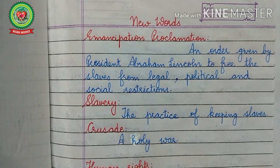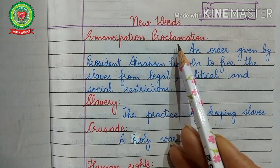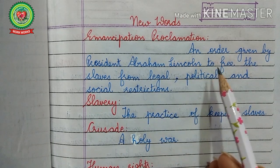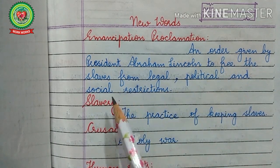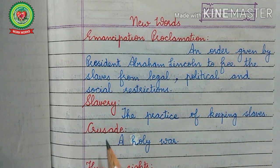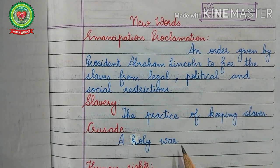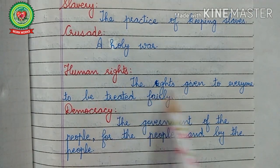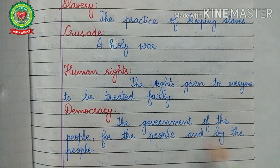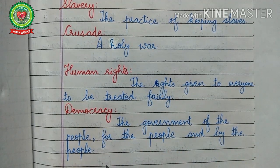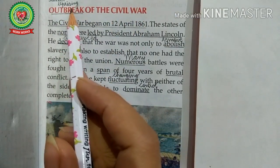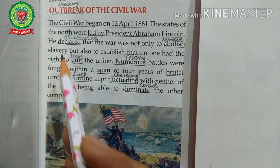New words related to today's topic: Emancipation Proclamation — an order given by President Abraham Lincoln to free the slaves from legal, political, and social restrictions. Slavery — the practice of keeping slaves. Crusade — a holy war. Human rights — the rights given to everyone to be treated fairly. Democracy — the government of the people, for the people, and by the people. The topic is outbreak of the Civil War; outbreak means uprising.